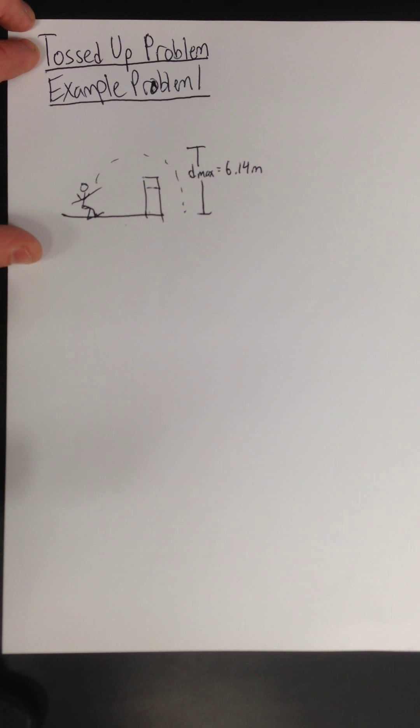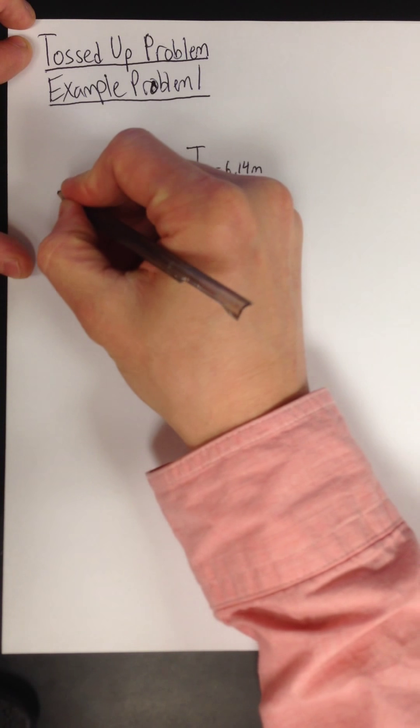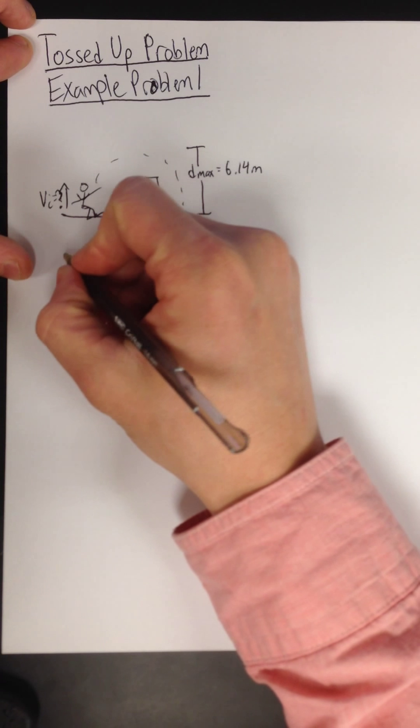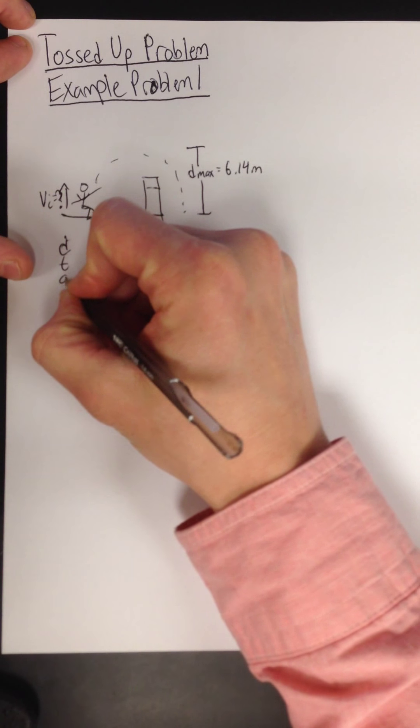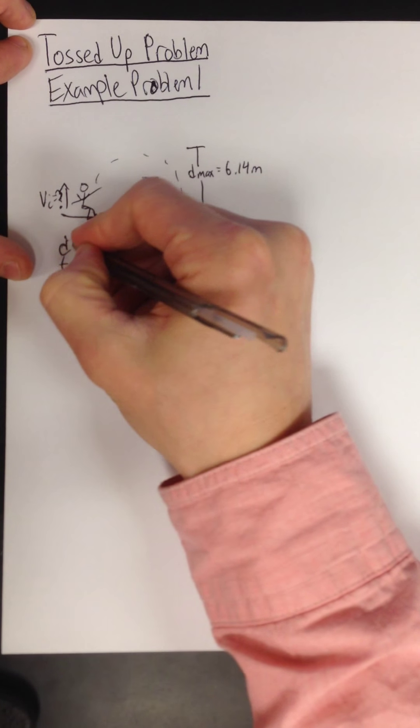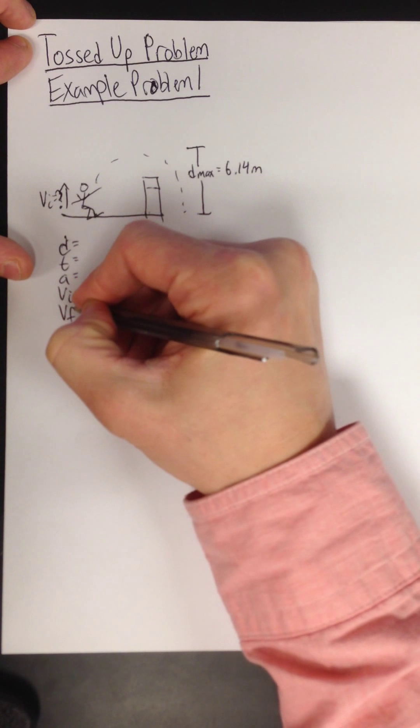And we could start now to list our givens and try and solve for first what speed, what initial velocity does he leave the ground with. That's going to be initial velocity because it's right when he enters the air. So we got D, T, A, VI, and VF are always our givens using the kinematic equations.